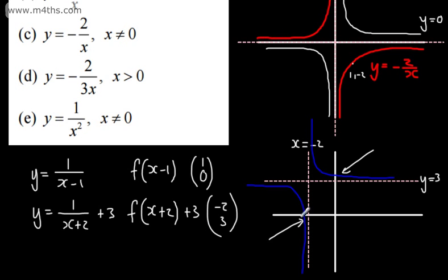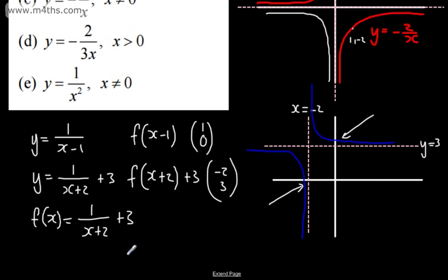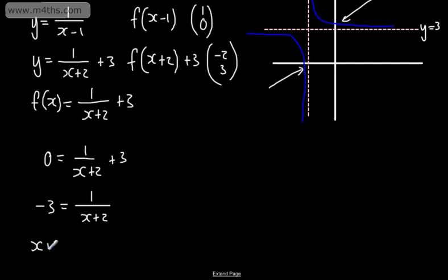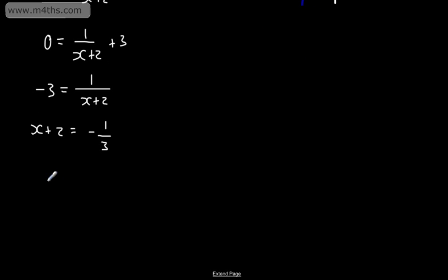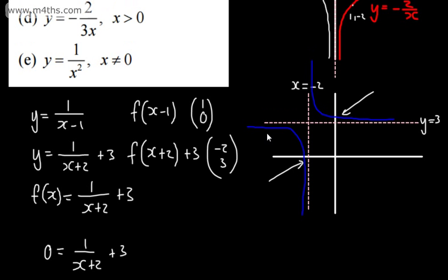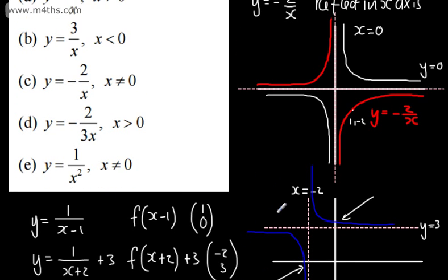We can also find where this graph crosses the axes. Setting f(x) = 0: 0 = 1/(x+2) + 3 gives -3 = 1/(x+2), so x+2 = -1/3, and x = -7/3. For the y-intercept, set x = 0: y = 1/2 + 3 = 3.5. So the graph crosses at (-7/3, 0) and (0, 3.5).